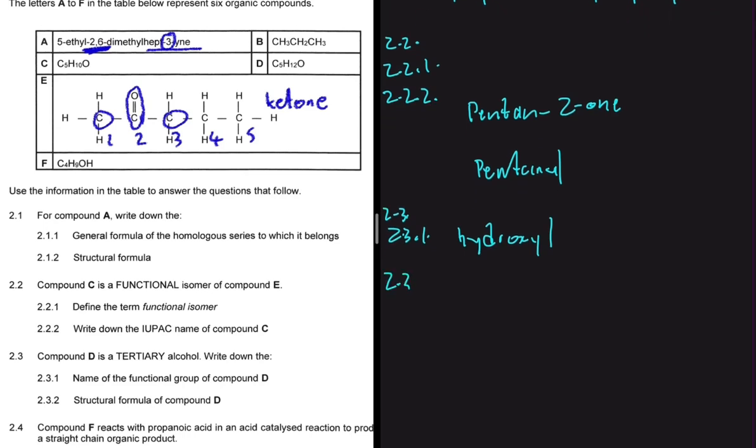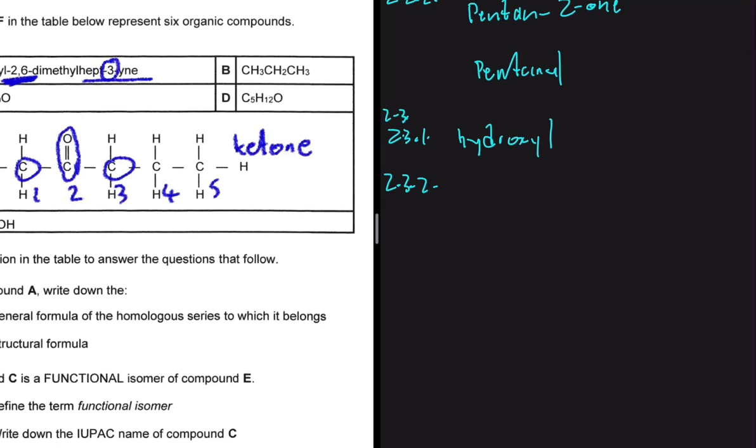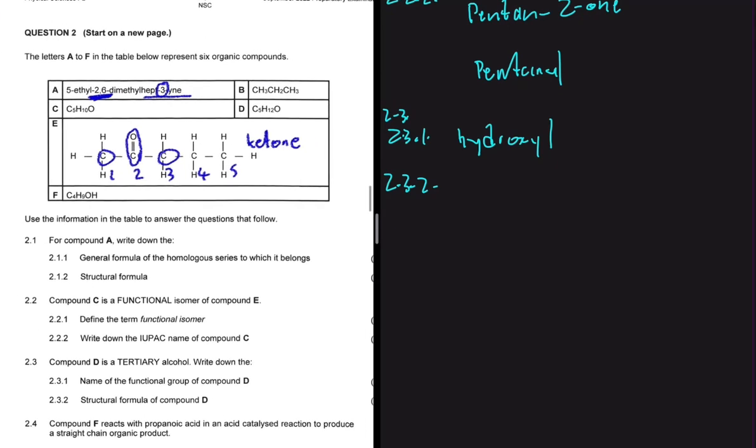And then 2.3.2, let's write down the structural formula of compound D. So compound D is an alcohol with five carbons. But then we need to put those five carbons such that the carbon that is bonded to OH is bonded to three other carbons. That is the only way we can have a tertiary alcohol. So let's see how we can possibly do that.